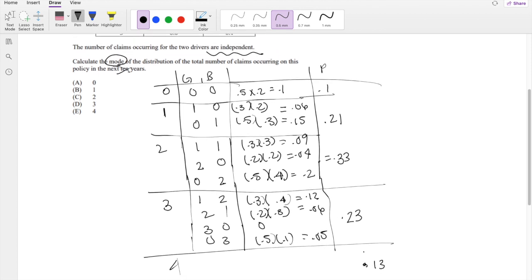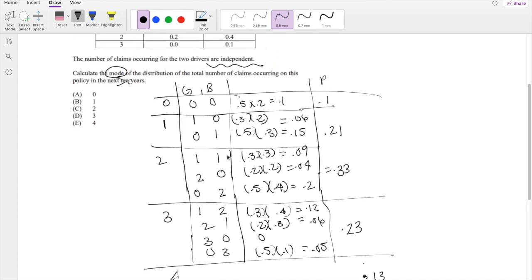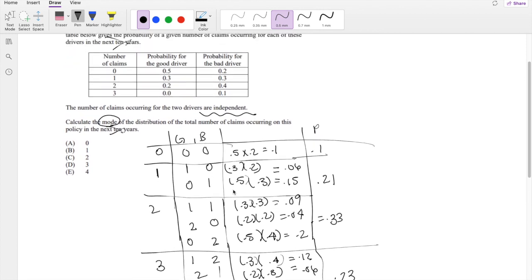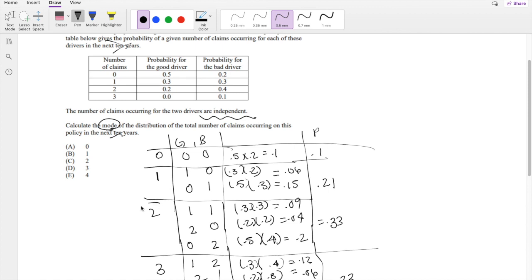So that means we know that it's not going to be 4 claims, 5 claims, 6 claims. So we can just stop here and conclude that the most number of claims is going to be 2 claims, which is because it has the highest probability, so it's the mode. So the answer is C.